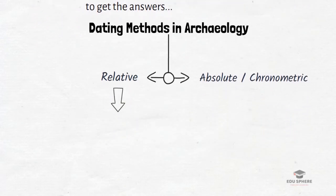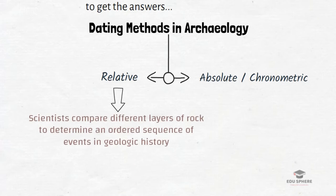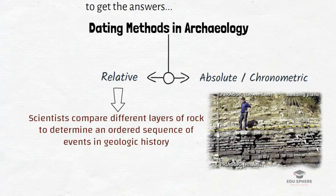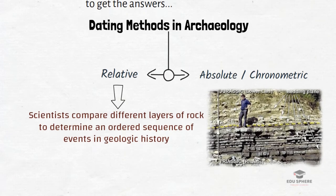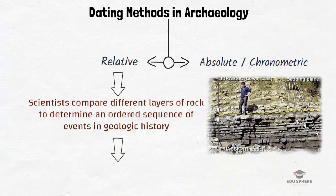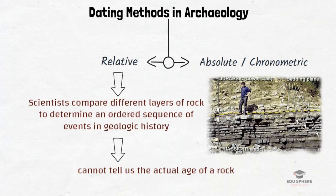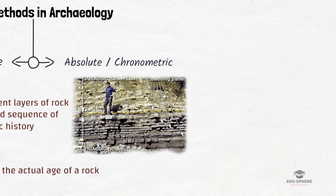The first method that scientists use to determine the age of rocks or artifacts is Relative dating. In this method, scientists compare different layers of rocks to determine an order sequence of events in geologic history — that means they don't really know how old their rocks actually are. The key in Relative dating is to find an ordered sequence. Scientists simply piece together a story of how one event came before or after another. Relative dating cannot tell us the actual age of a rock; it can only tell us whether one rock is older or younger than the other.